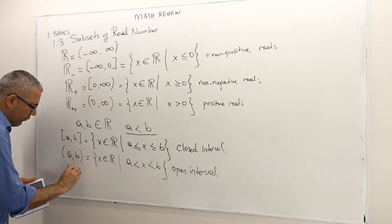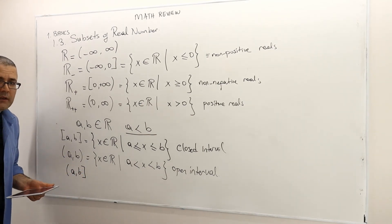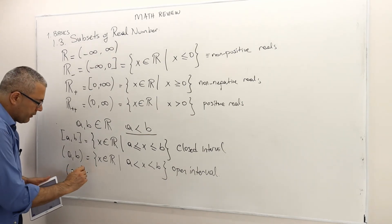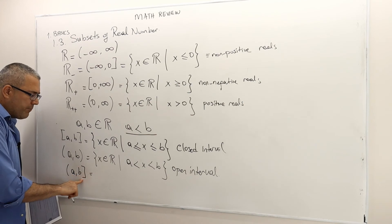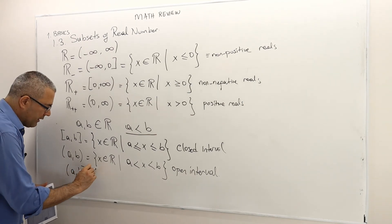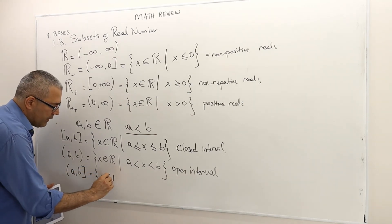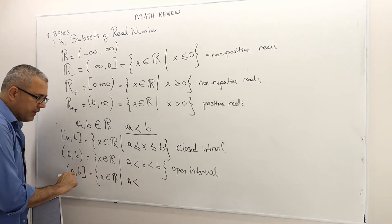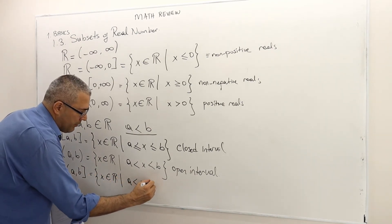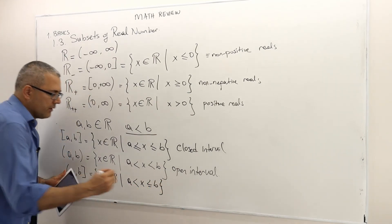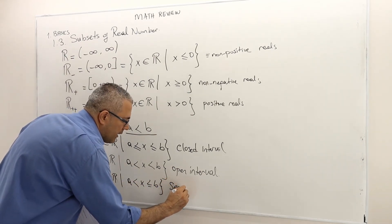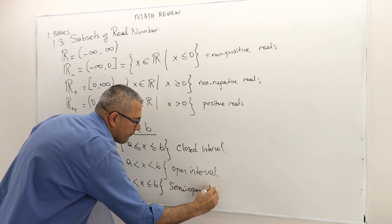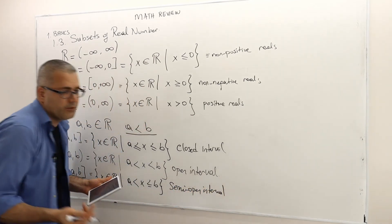We also have what we call semi-open or semi-closed intervals, where one boundary is included but the other one is not. For example, (a, b] is the set of reals where the lower bound a is not included, but the upper bound b is included. It's a semi-open or semi-closed interval — glass half full, half empty.